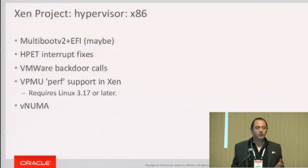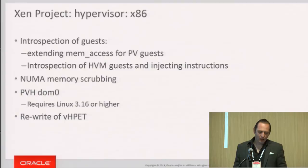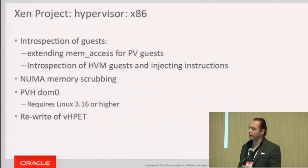One of our OPW interns has been focusing on vNUMA, which is important for large-scale machines — you have NUMA on large machines and need a way of allocating a guest and passing NUMA topology to applications so they can take advantage of it. Some other features being added include the ability to analyze guests for viruses or malware from a separate domain.